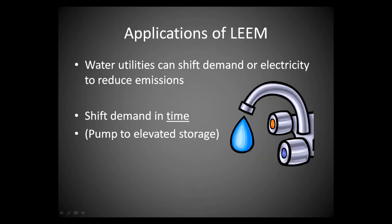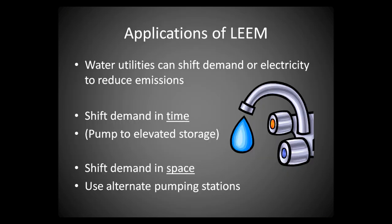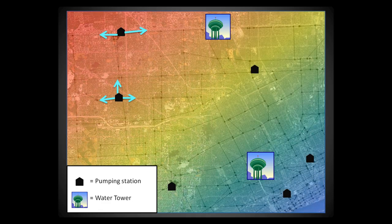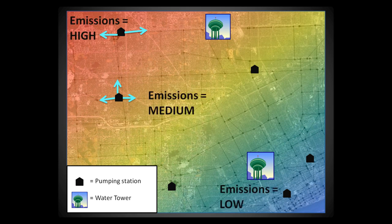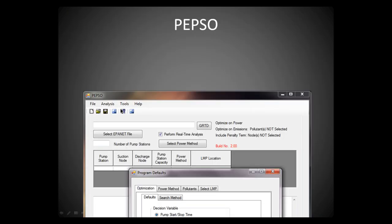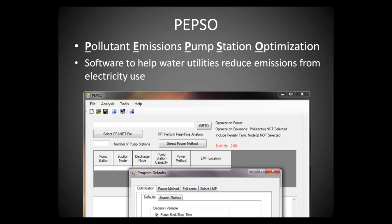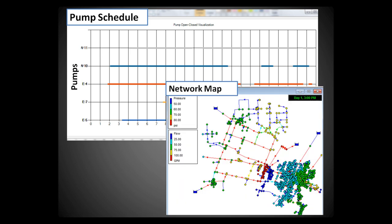Water distribution systems that cover a large area could also shift their electric demand spatially, taking advantage of the fact that LMPs, marginal generators, and marginal emissions vary by location. Pumping could be shifted to alternate pumping stations when emissions were high in a particular area. Our team is developing a software called PEPSO, or Pollutant Emissions Pump Station Optimization. This software is designed to help water utilities reduce the air emissions from electricity use by calculating an optimal pumping schedule that accounts for how emissions vary in time and spatially.